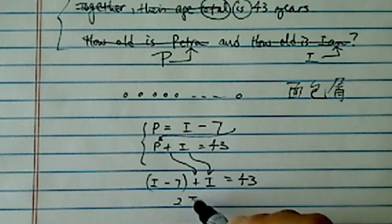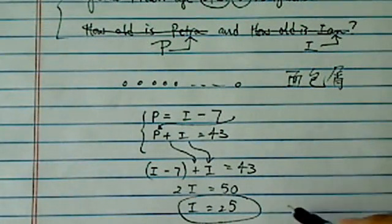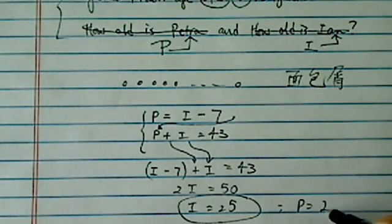I have two I is equal to 50 or Ian is 25 years old. If Ian is 25 years old, Petra is 25 minus seven or 18 years old.